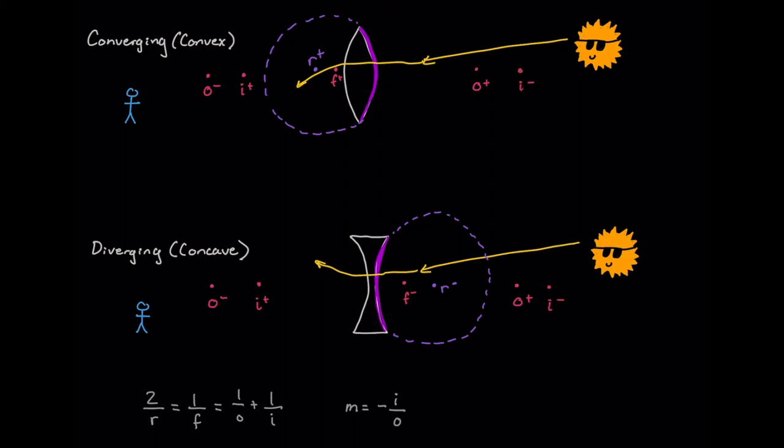So that's all we need to know as far as sign conventions. And for the rest of these problems, we can pretty much figure out all the rest of the stuff. So if we only know, for example, two of these variables, we can figure out the other variable from this equation, and then figure out our magnification from this equation down here.